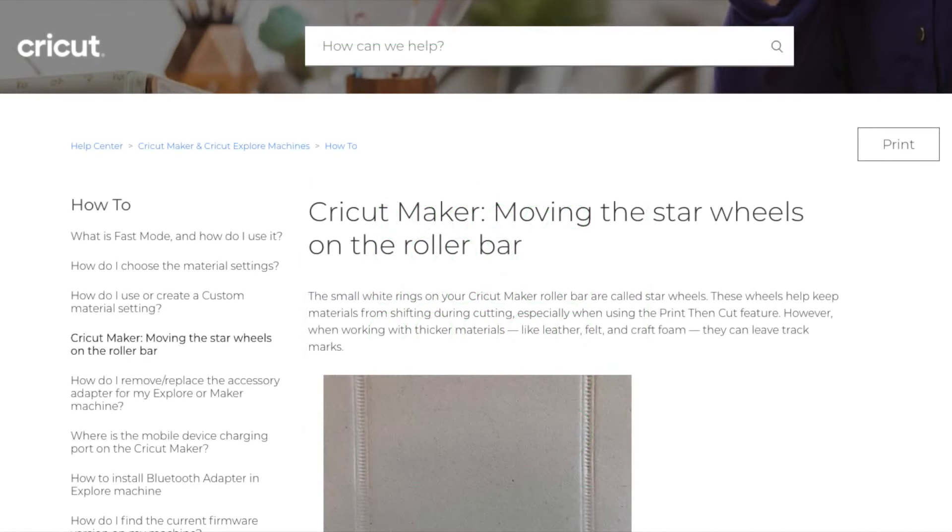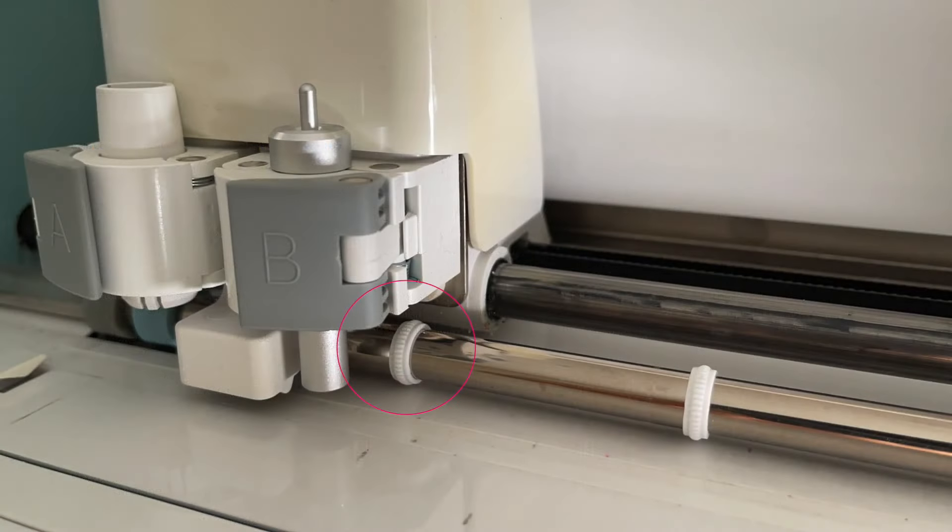This was my first time cutting matboard with my Cricut Explore Air so I researched the Cricut website to find out more information and I'll leave you a link below the video. Cricut refers to these as star wheels. They help keep materials from shifting during cutting but when we cut thick materials like matboard they can leave track marks. So let me show you how to move them over.